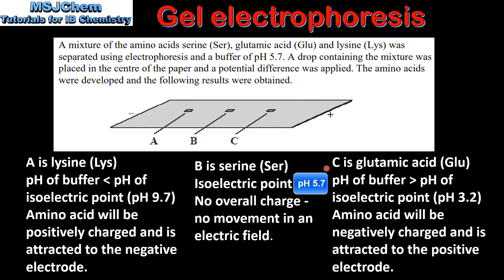And finally, amino acid C which is glutamic acid. The pH of the buffer is greater than the isoelectric point of glutamic acid, which is pH 3.2. Therefore the amino acid will be negatively charged and is attracted to the positive electrode.